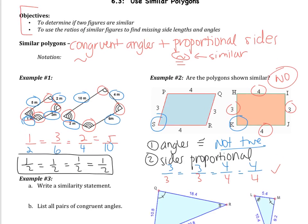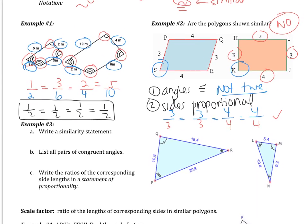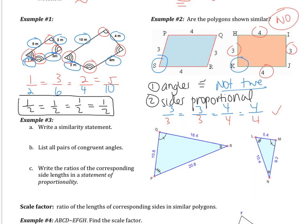Let's look at another example. Example number 3 says write a similarity statement. You've written congruency statements before — triangle blah blah blah is congruent to triangle blah blah blah. In this case it's similarity, so it's going to be triangle [name] is similar to triangle [name]. The first triangle — the order doesn't matter — I'm going to write as QRP.